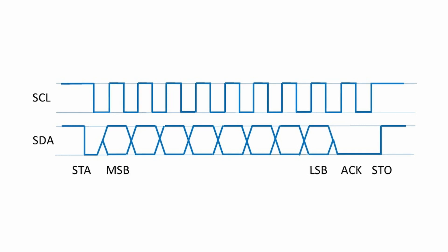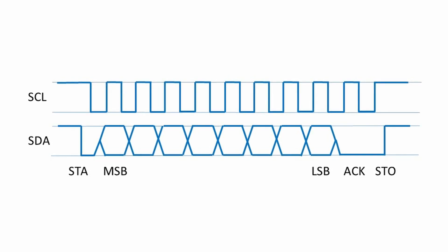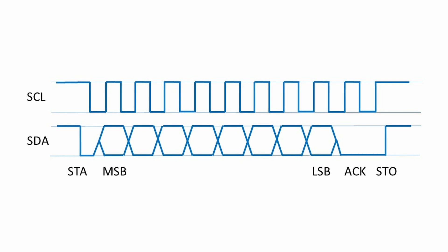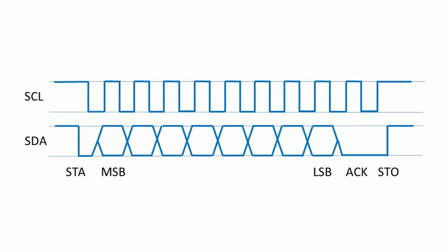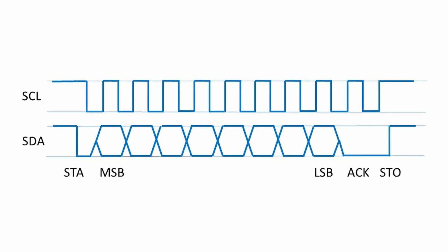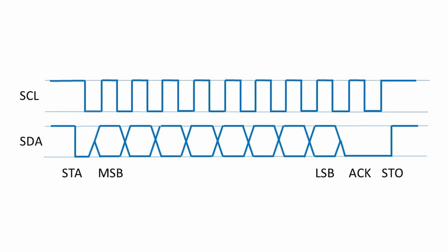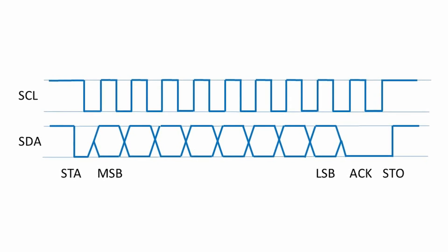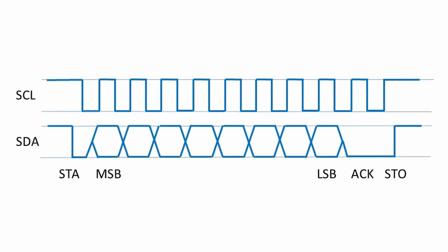For 0, data is sent by the master, meaning write. For 1, data is sent by the slave, indicating read. The receiving unit must acknowledge every full byte of 8 bits. There is no limitation on the number of data bytes in the frame — for example, samples from an analog-to-digital converter can be read continuously, byte after byte. At the end of the frame, another particular sequence is sent by the master: a stop condition.